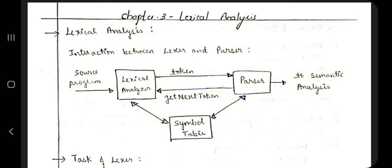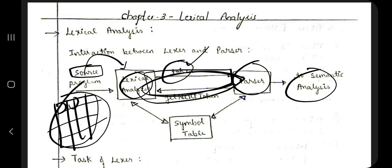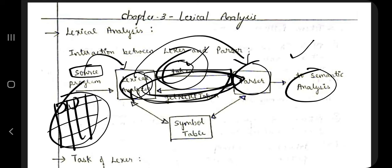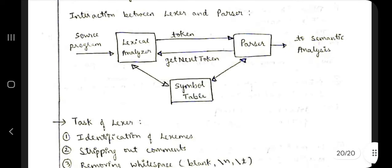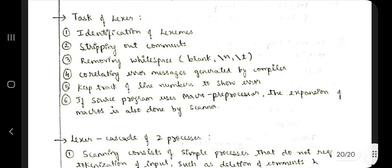Most exam questions are from the lexical analysis topic. The source program is input to the lexical analyzer, which divides it into tokens. Those tokens are sent to the parser, which checks the logic. After processing the first token, it returns for the second token, and this continues until all tokens are processed. A symbol table is maintained to store new tokens and track their addresses and references.